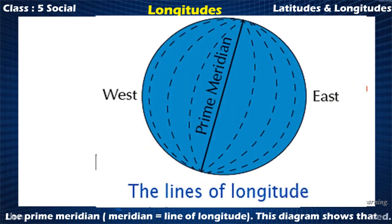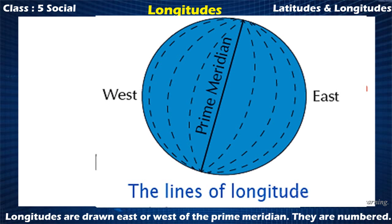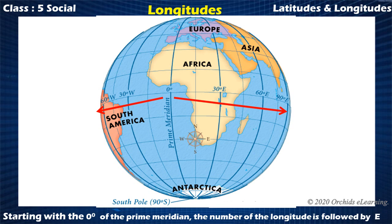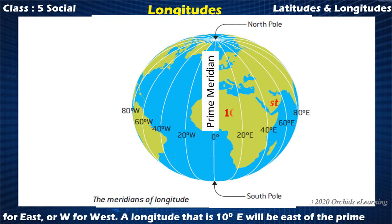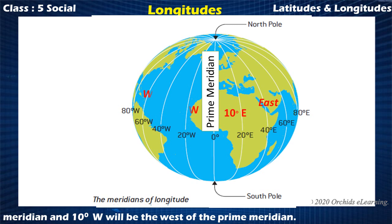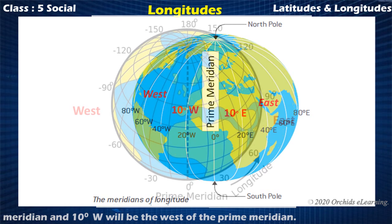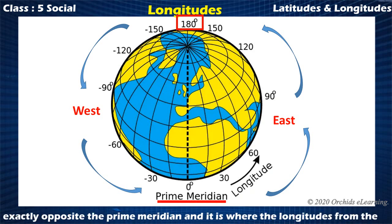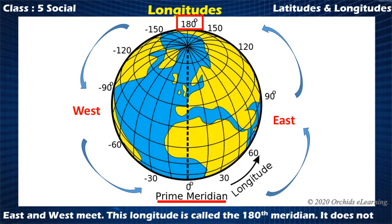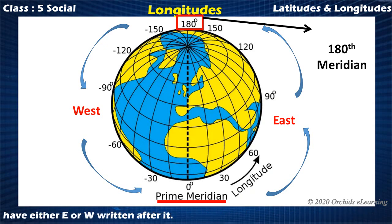Longitudes are drawn east or west of the prime meridian and are also numbered. Starting with zero degrees of the prime meridian, the number of the longitude is followed by E for east or W for west. A longitude that is 10 degrees E will be east of the prime meridian, and 10 degrees W will be west of the prime meridian. The longitudes continue east and west around the globe up to 180 degrees, which is exactly opposite the prime meridian — where the longitudes from the east and west meet. This longitude is called the 180th meridian and does not have either E or W written after it.